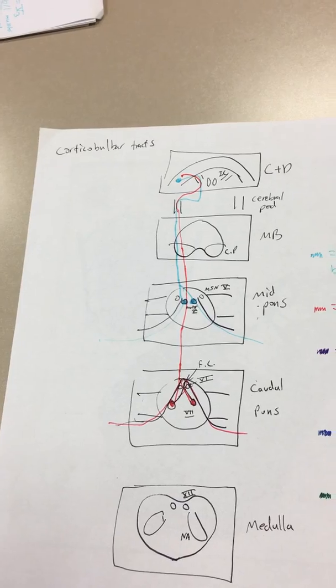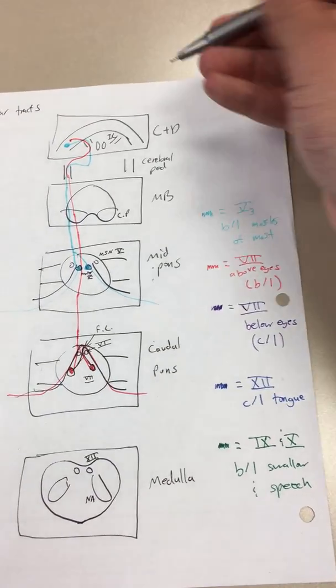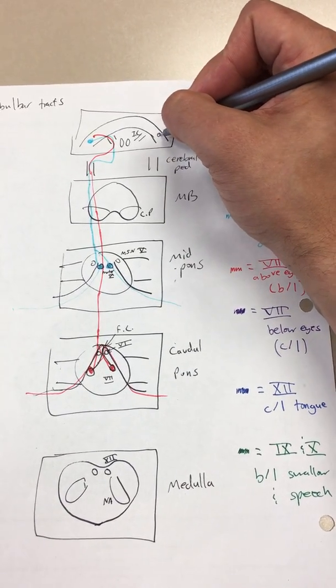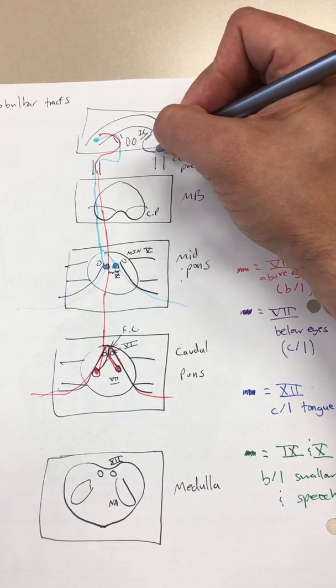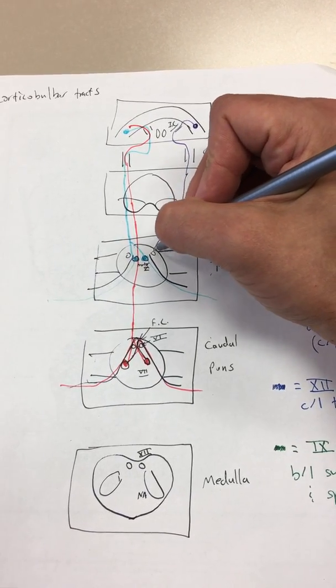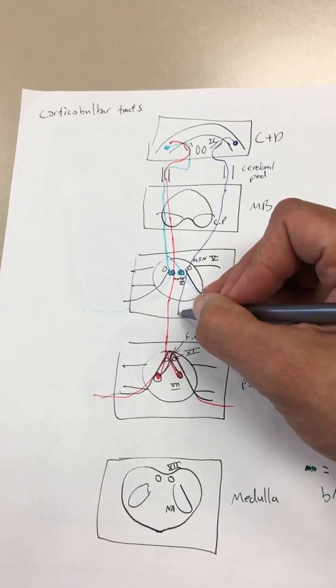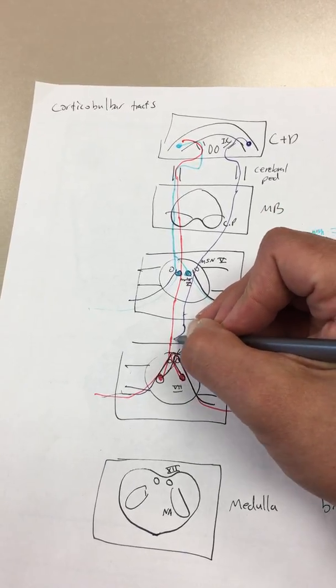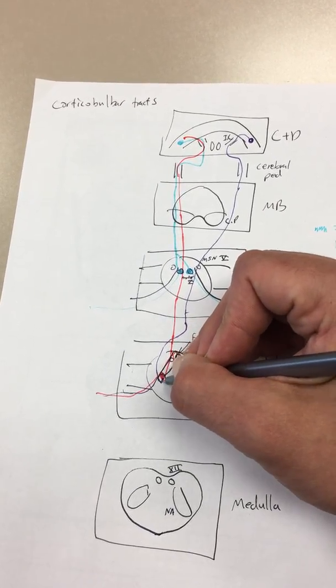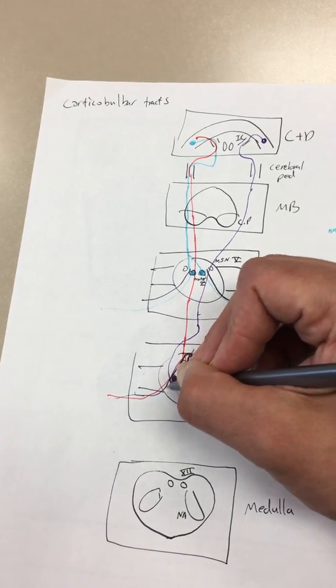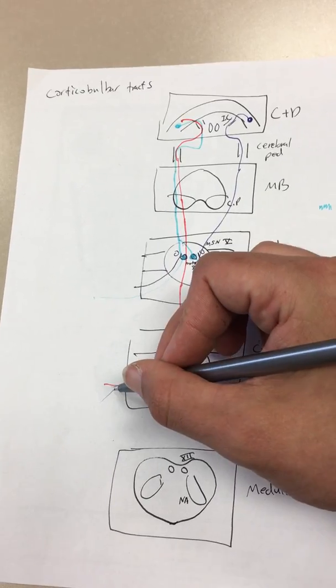In comparison, if we had one coming from below the eyes, say you were trying to smile, we'll do it on this side. It's going to go again through the same structures until it gets to the caudal pons. At this point, it's only going to go to our contralateral seventh nucleus, synapse there, and then move out to below the face for your smile.